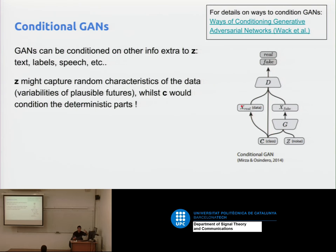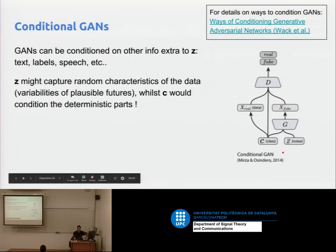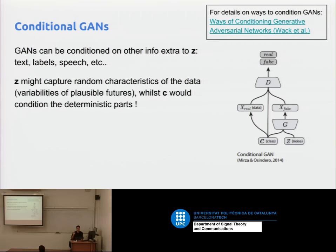If you only give C to the generator, it can ignore those codes because the discriminator is just saying real or fake with random images. But if you give the conditioning to both, the discriminator also partitions the decision space — it's not only about an image, it's an image conditioned on a label, so it should match the label. Give the conditioning to both networks. Every clue the discriminator has is better for the generator to be more realistic.